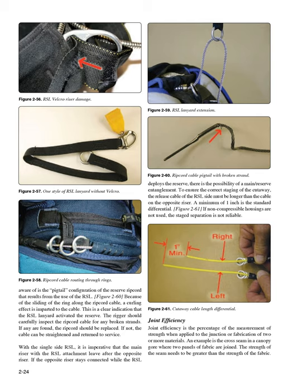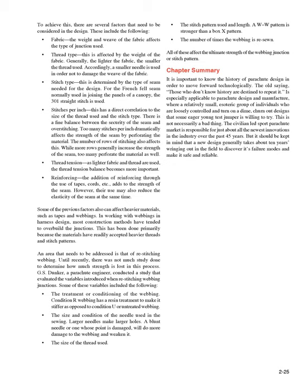Joint Efficiency. Joint efficiency is the percentage measurement of strength when applied to the junction or fabrication of two or more materials. An example is the cross seam in a canopy gore where two panels of fabric are joined—the strength of the seam needs to be greater than the strength of the fabric. To achieve this, several factors need to be considered in the design, including fabric weight and weave, which affects the type of junction used, as well as thread type.